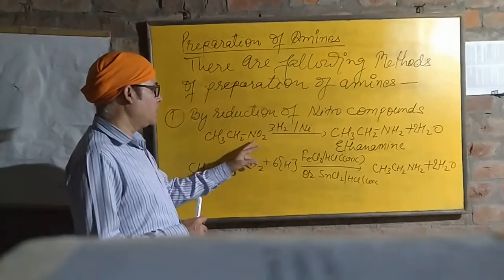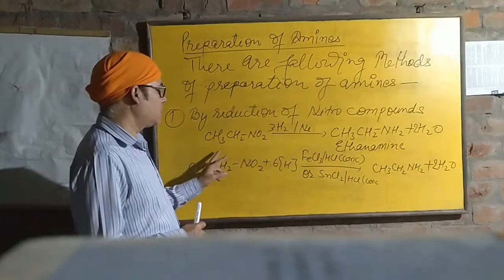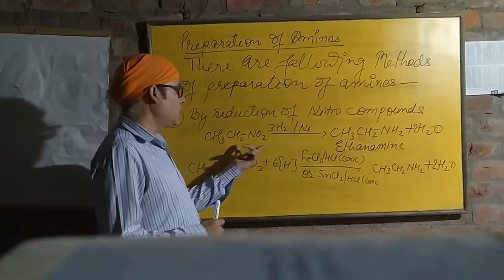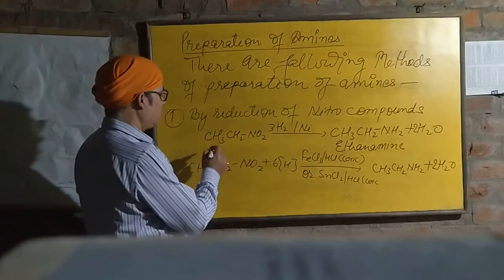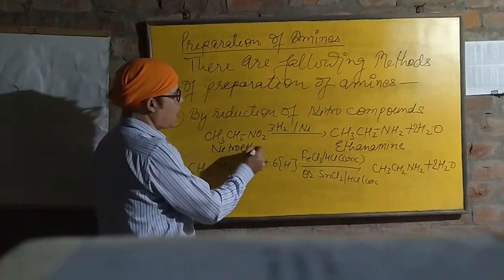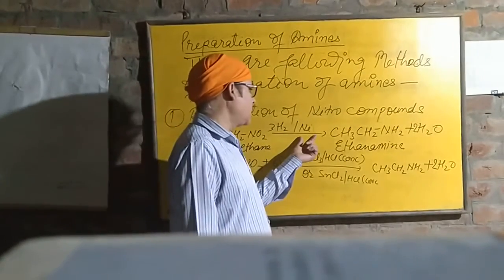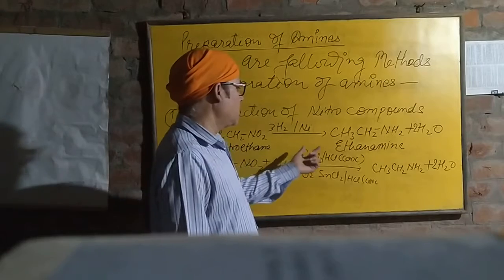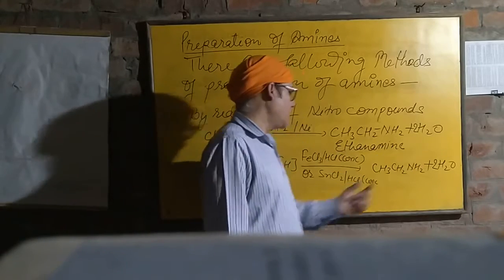In the first method, we see here three hydrogen molecules reduce nitroethane with the help of nickel. This way we get ethanamine and water molecules.